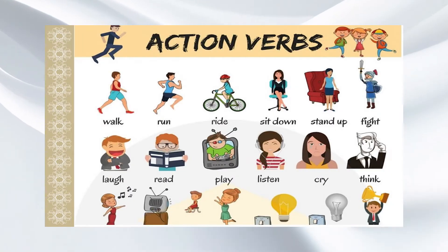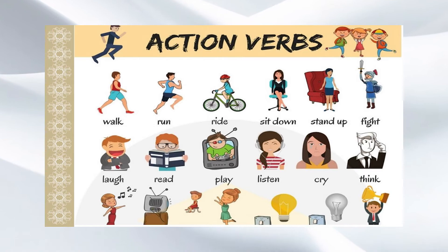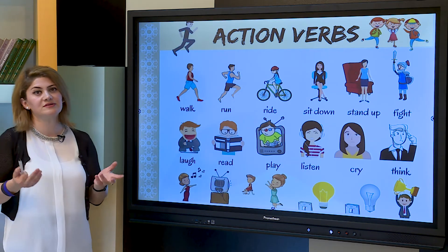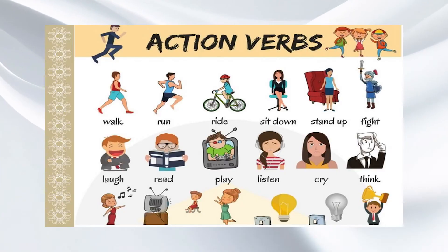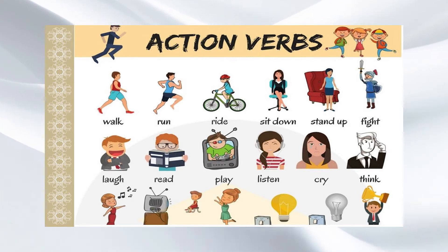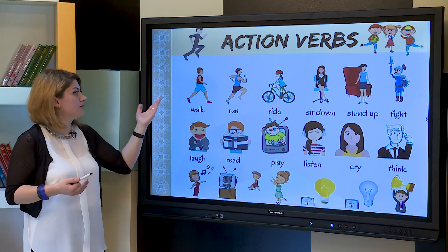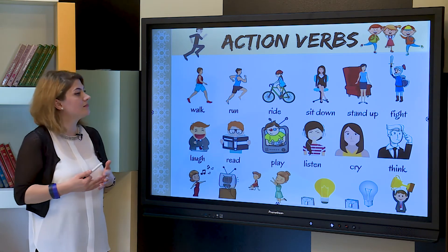Now I want to introduce you our grammar. Our today's grammar is about verbs — a verb is an experience, an action, a state or event. There are many types of verbs: transitive, intransitive, linking verbs, helping verbs. But I want to speak about regular and irregular verbs. There are some action verbs — for example: walk, run, ride, sit down, stand up, fight, laugh, read, play, listen, cry, think.